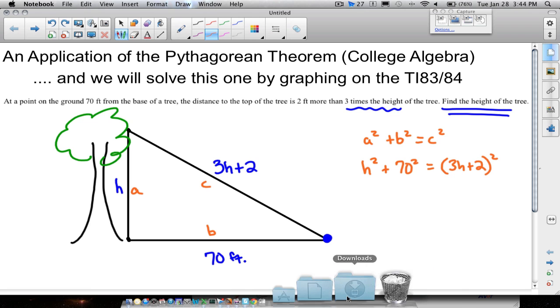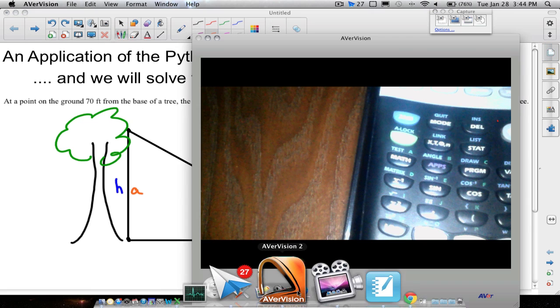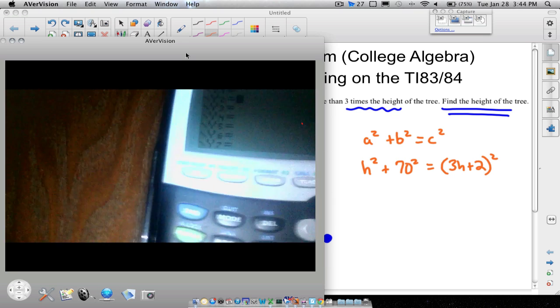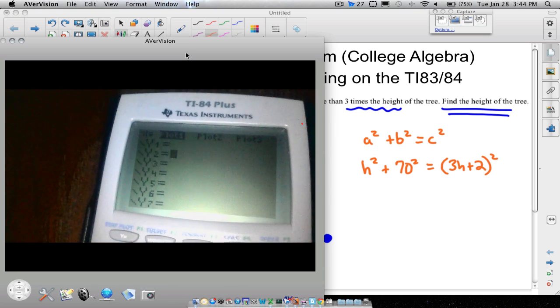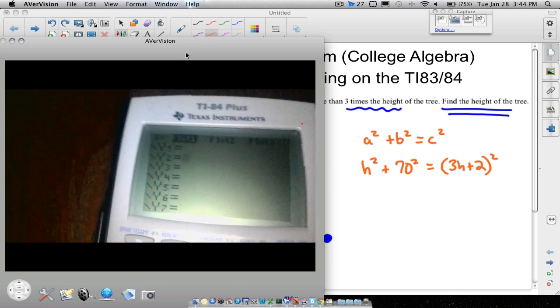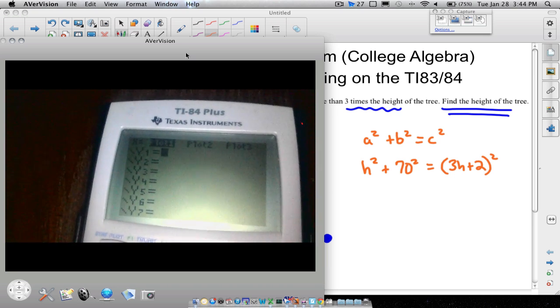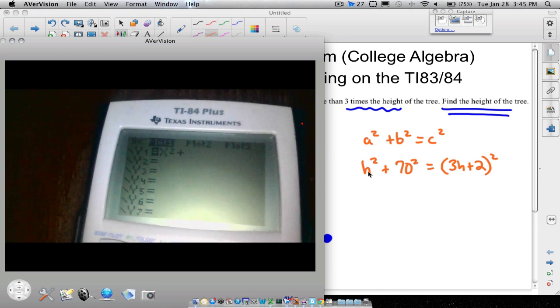So let's grab our calculator real quick. And what we can do now, we can't use the h's but we can use x instead of h. So therefore I'm going to go to y1. I'm going to type in one side of my equation: h² + 70². Now we're going to use an x here so we can do x².